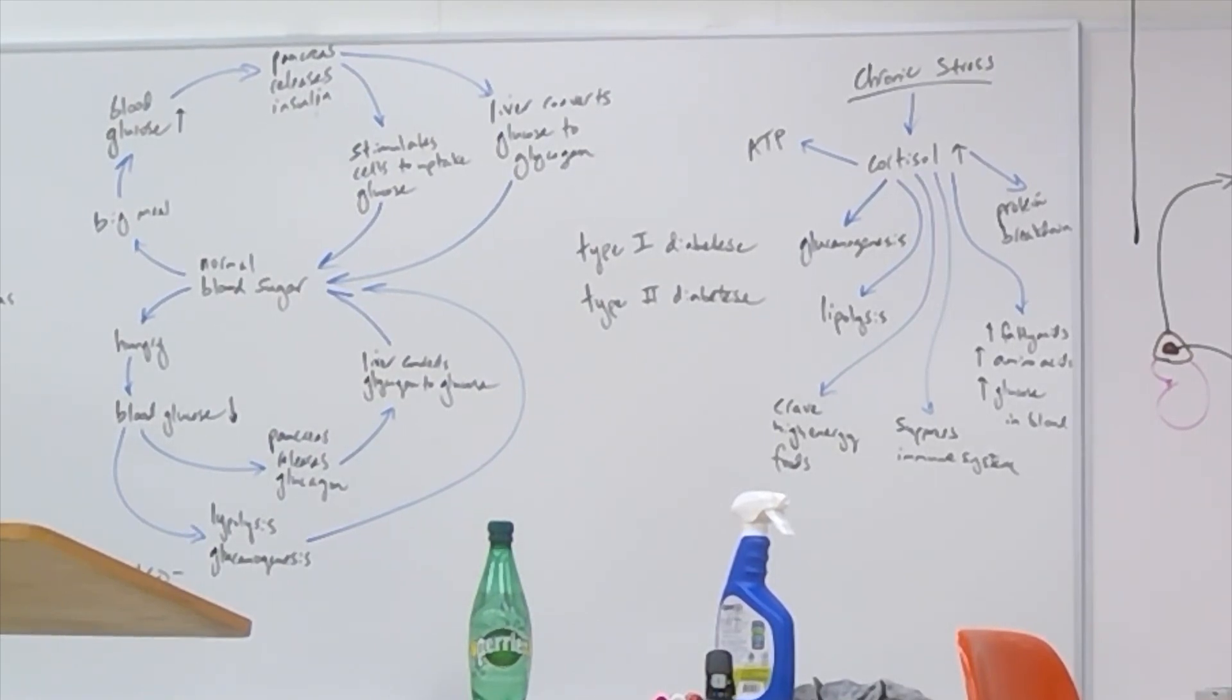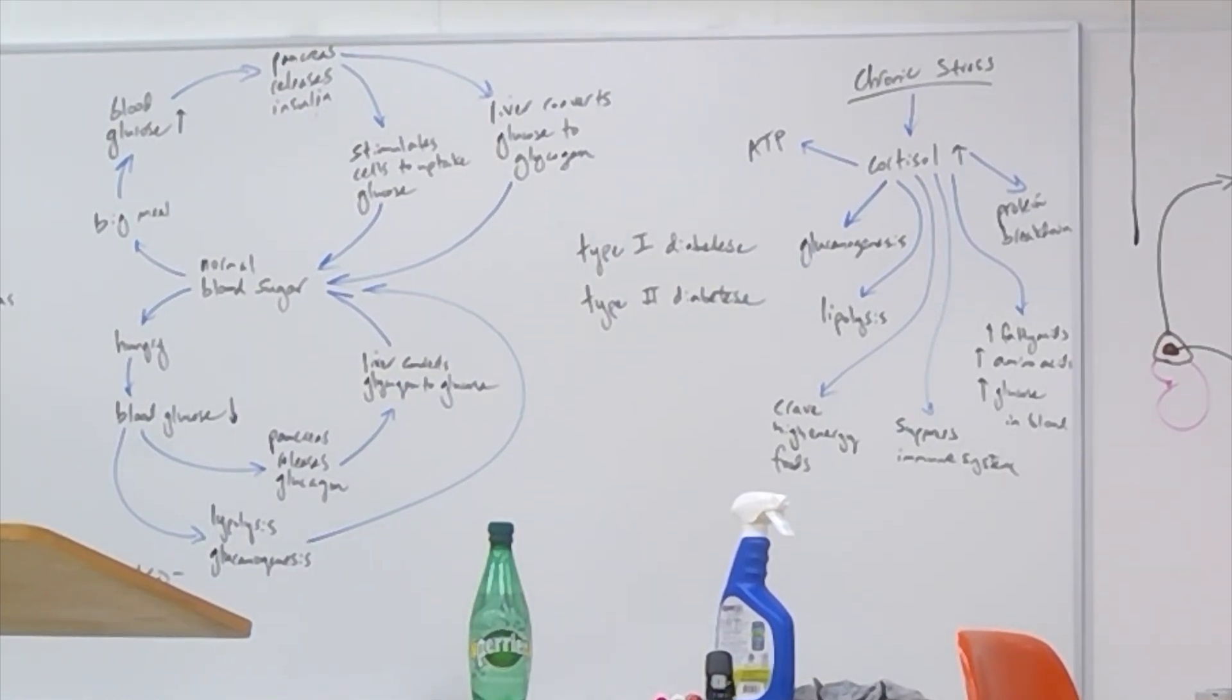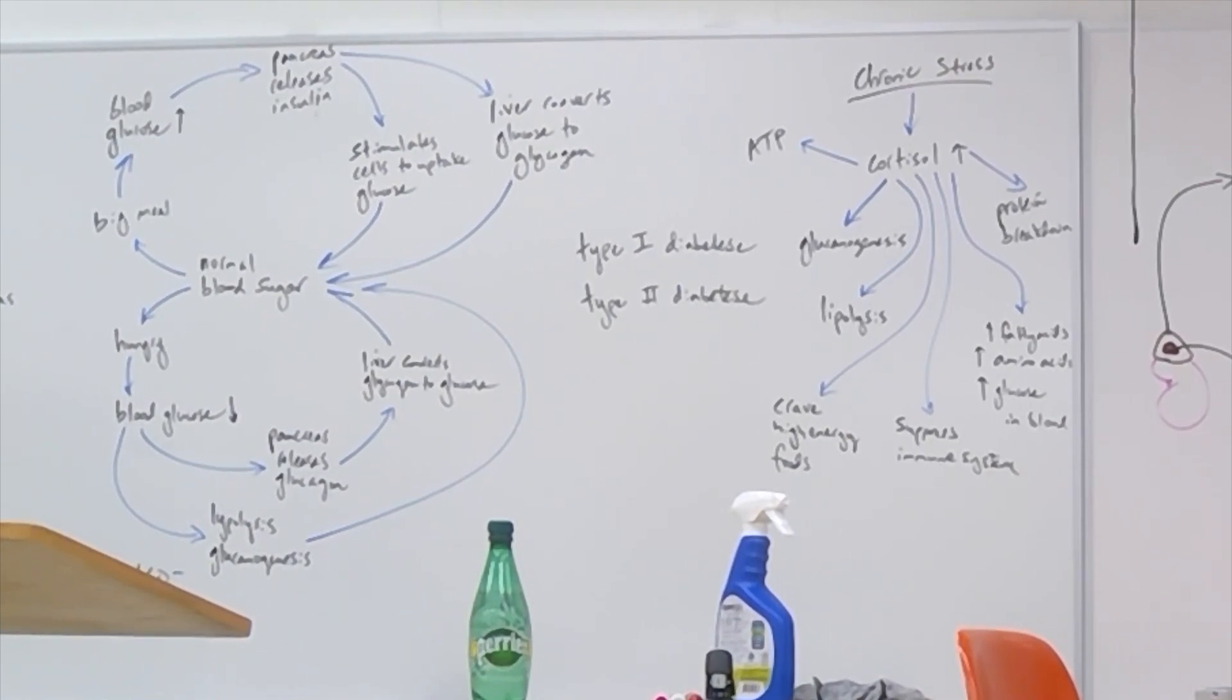So the function of cortisol is that it just provides as much usable energy ready for the body as possible. It suppresses the immune system. It shuts it down. Why suppress it?